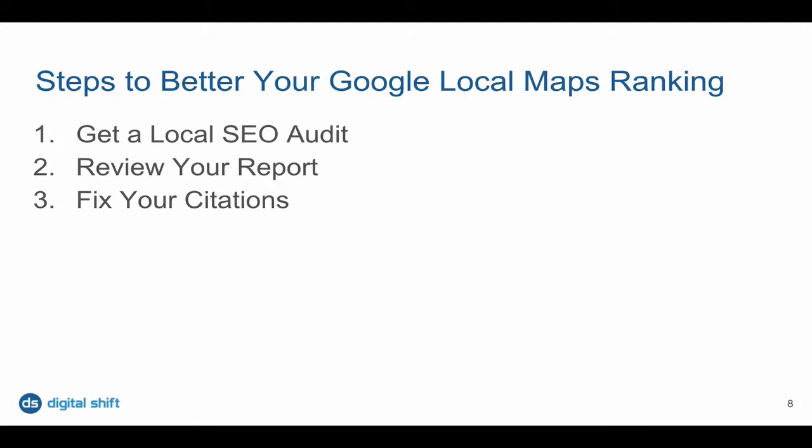Now that the technical stuff is out of the way, let's look at the next three steps to help improve your Google Maps ranking. Step number one is to get a local SEO audit done. Make sure you get a brand new audit — if you've had an old one, you want to pull a brand new audit that shows the most relevant and most recent information from Google.